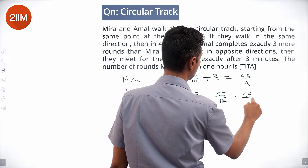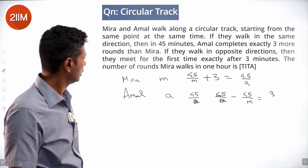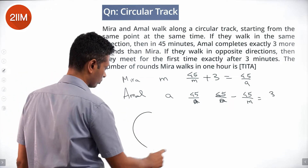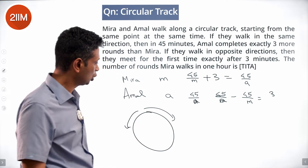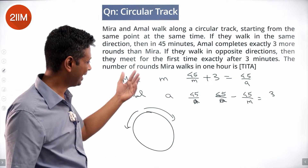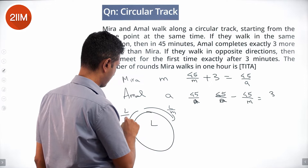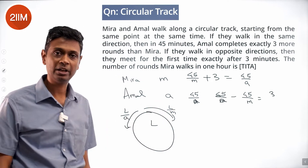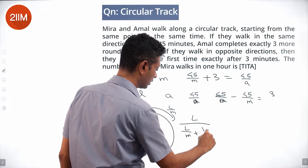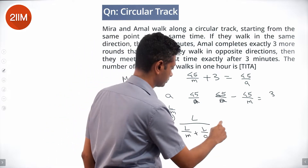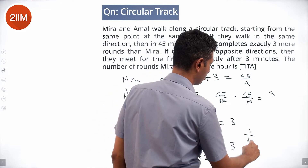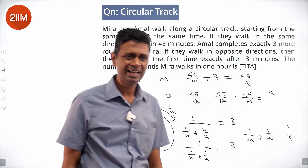45/a minus 45/m equals 3. If they walk in opposite directions and meet for the first time after t minutes: Meera's speed is 1/m laps per minute, Amal's is 1/a. Their relative speed is 1/m plus 1/a, so the time for one relative lap is 1 divided by (1/m + 1/a), which equals 3. Therefore, 1/m plus 1/a equals 1/3.